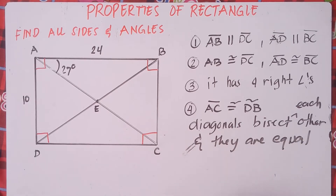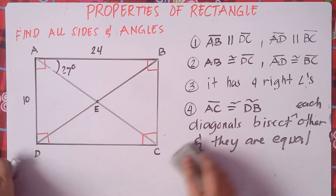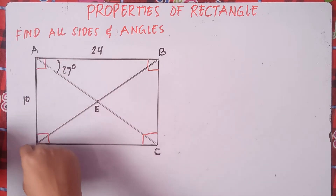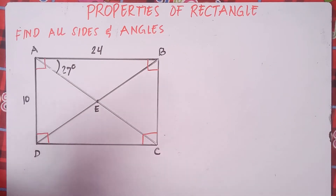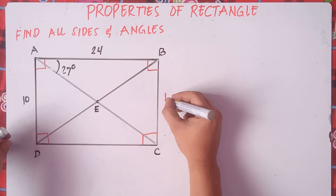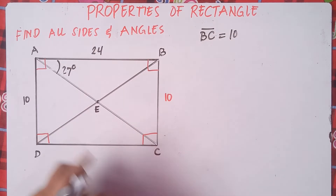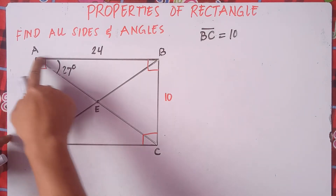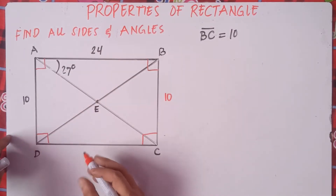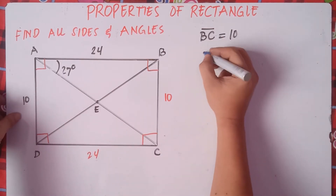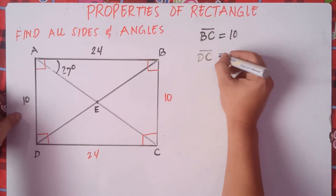So let's solve for the sides and angles — finding the sides first. If AD is 10, therefore BC is equal to 10. And if AB is 24, therefore DC is equal to 24, because opposite sides are congruent.